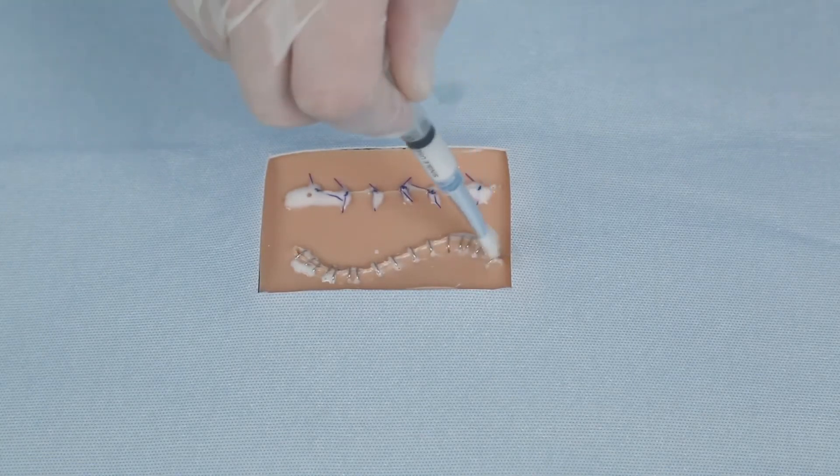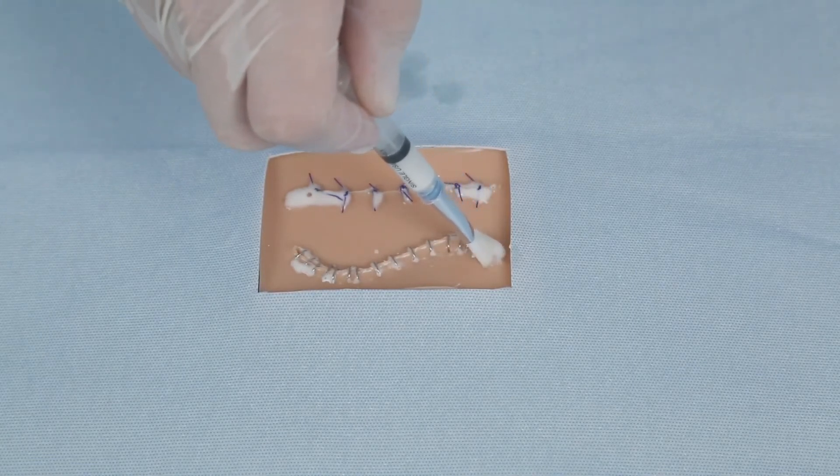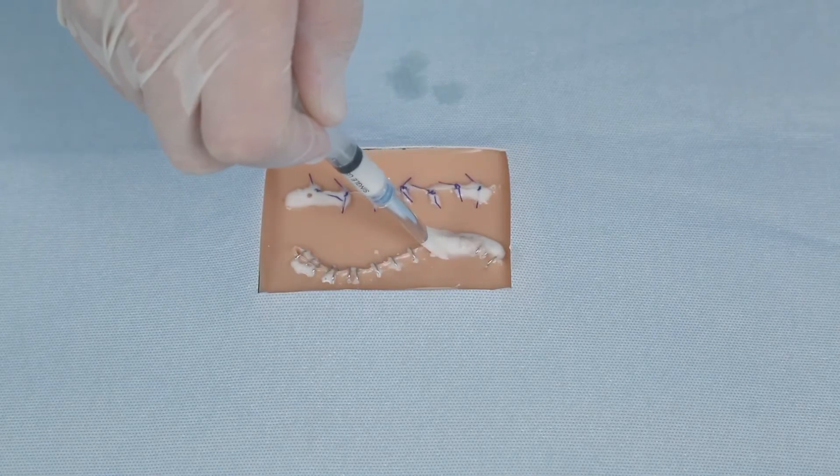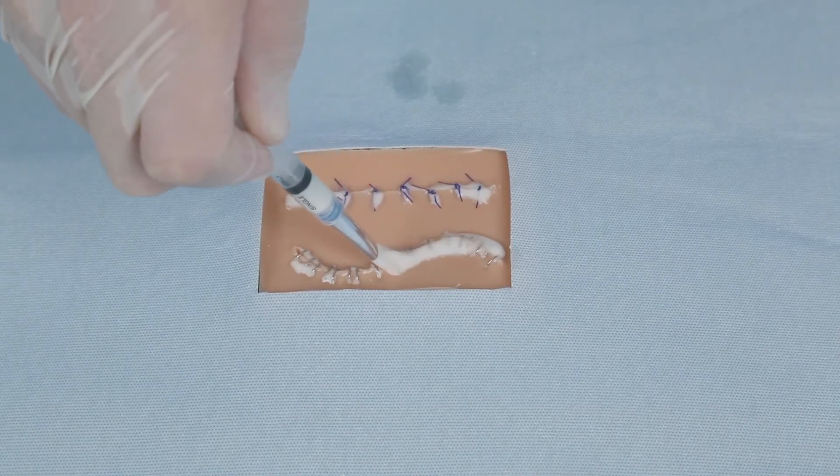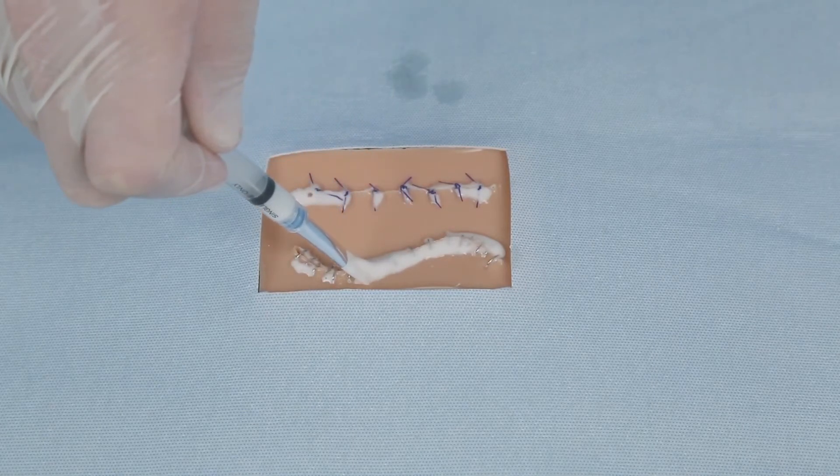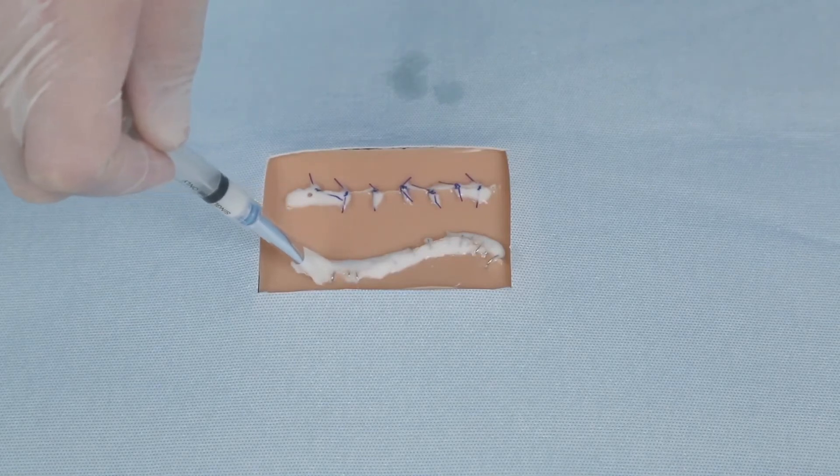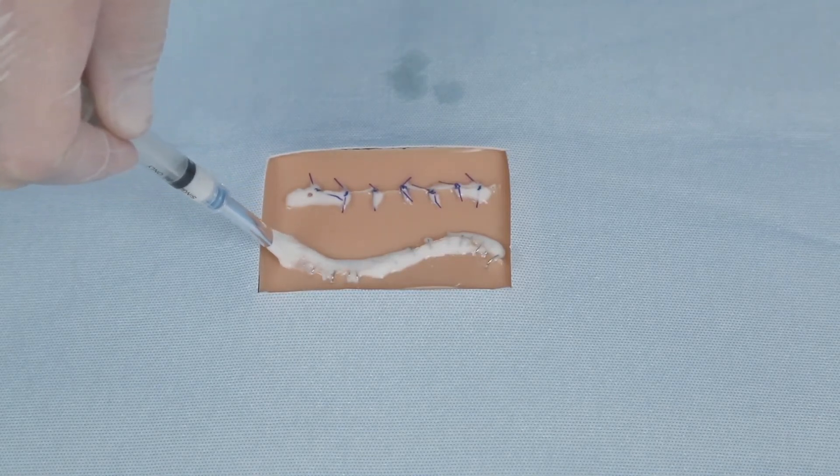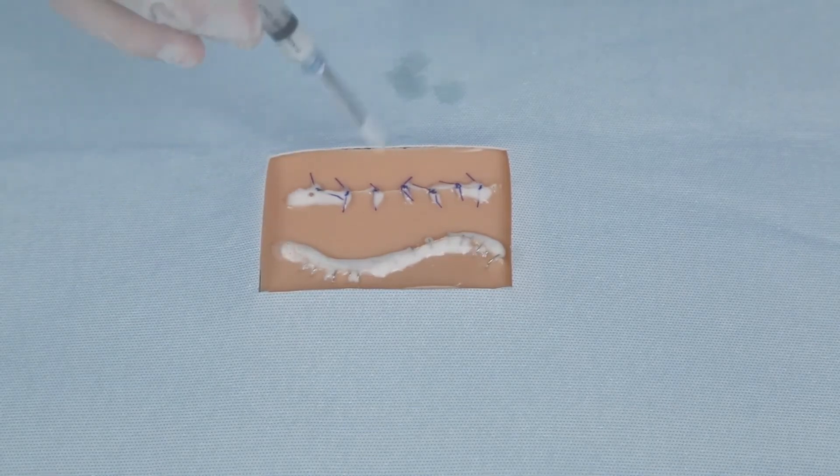Within two minutes the SutureSeal polymer will become an adherent gel. SutureSeal will remain on the suture or wound area for approximately 14 days and will biodegrade away slowly. Apply a second application of SutureSeal if the suture or wound is not completely healed after 14 days.